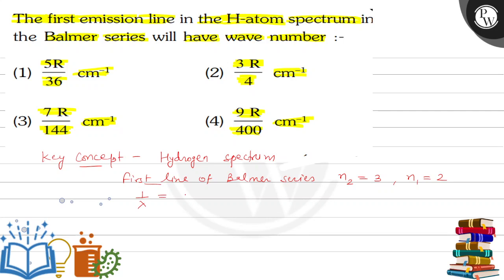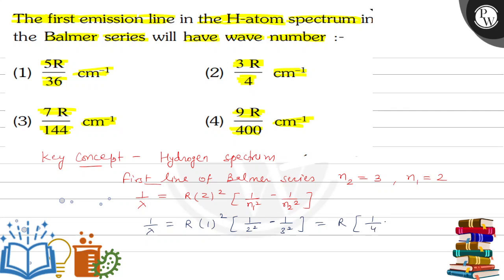Using the formula: one upon lambda equals R times Z squared times (one upon n1 squared minus one upon n2 squared). Putting in the values with Z equal to 1: one upon lambda equals R times (one upon 4 minus one upon 9).